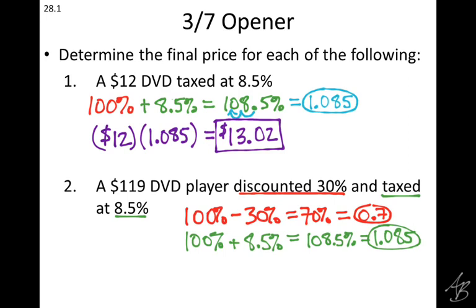Now what? Let's multiply and write $119. So we're going to take that original price, $119, and we multiply it by each of those multipliers, by 0.7 and by 1.085.